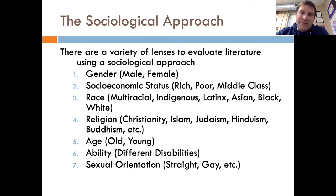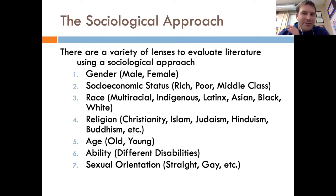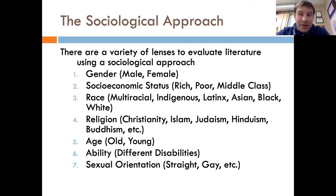You also have religion. You could look at what the text has to say about Christianity, Islam, Judaism, Hinduism, Buddhism, atheism — that's another one. You could also look at age — what is this text trying to tell us about old people or young people? Then there's ability — what is this text trying to tell us about people who have disabilities? If they're not included, why are these people being pushed to a corner of society? You also have sexual orientation — what is this story trying to tell us about straight people, gay people, or any of the other sexual orientations out there? I'm not going to force you to pick any specific one of these seven.